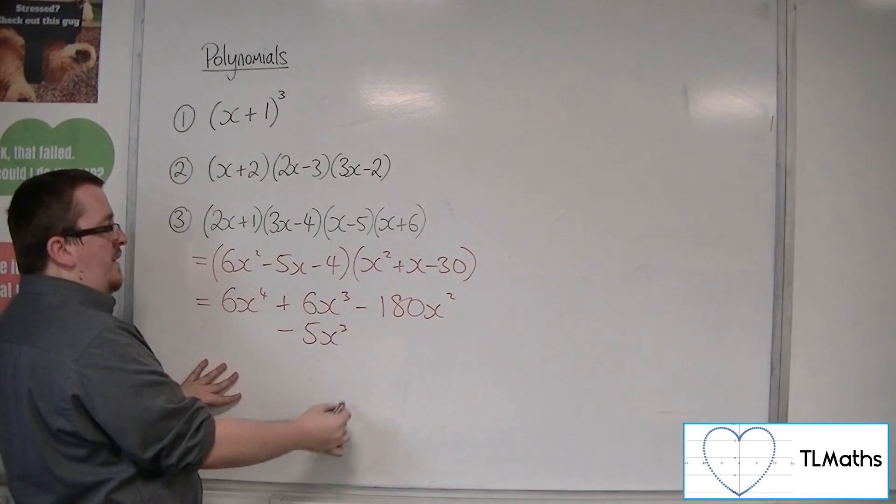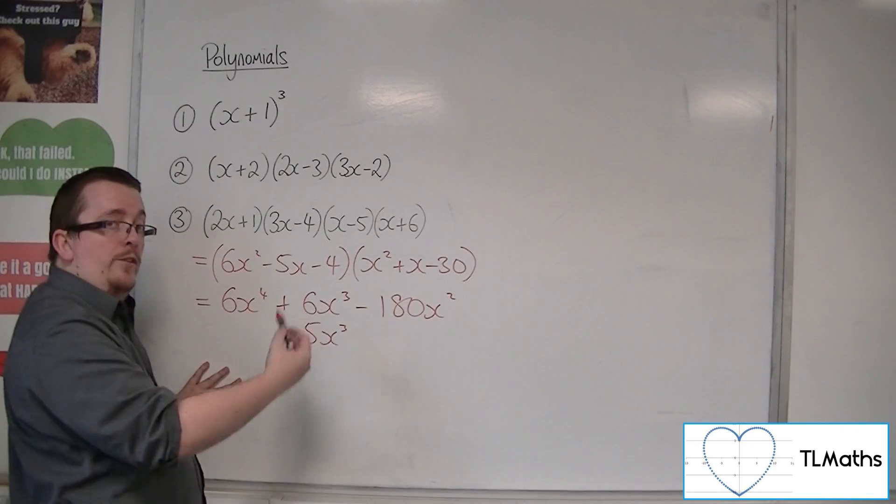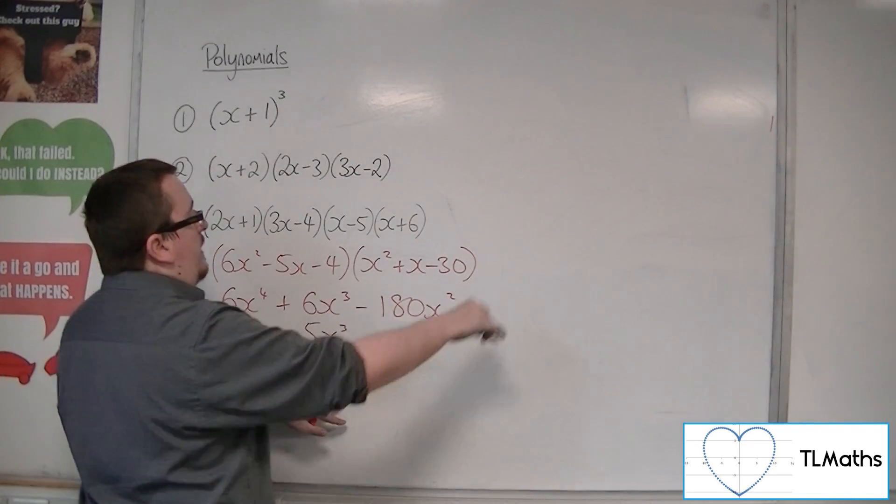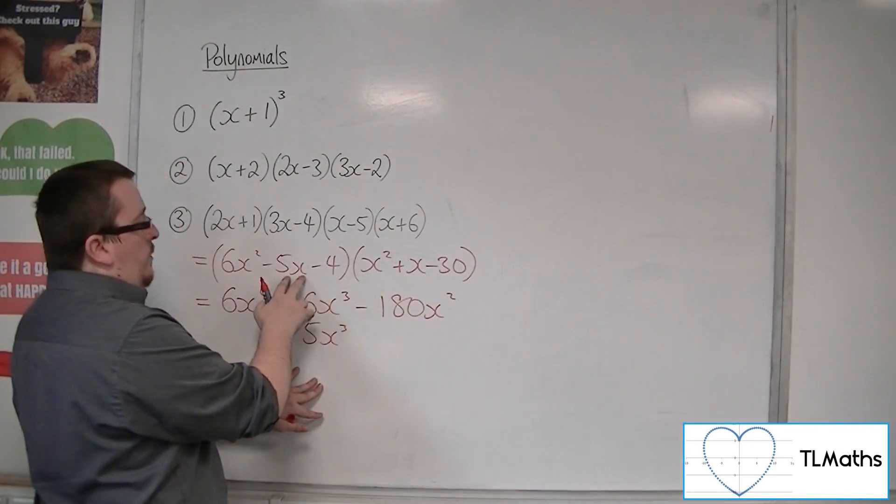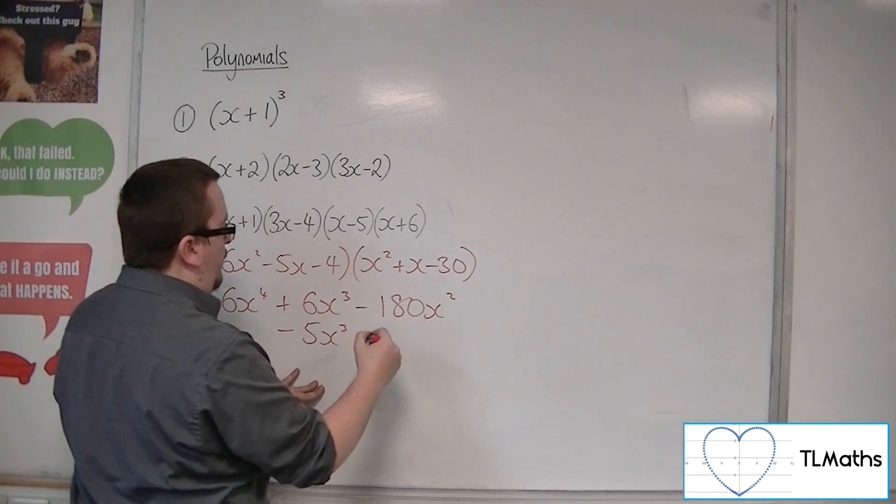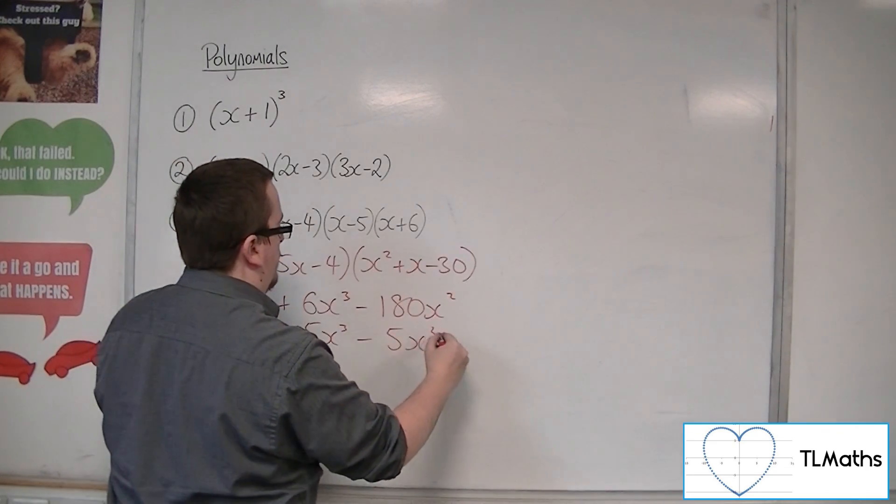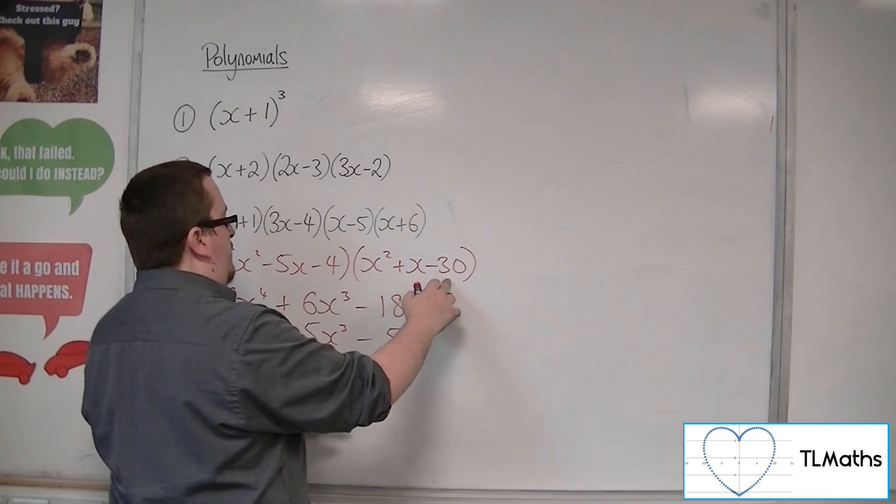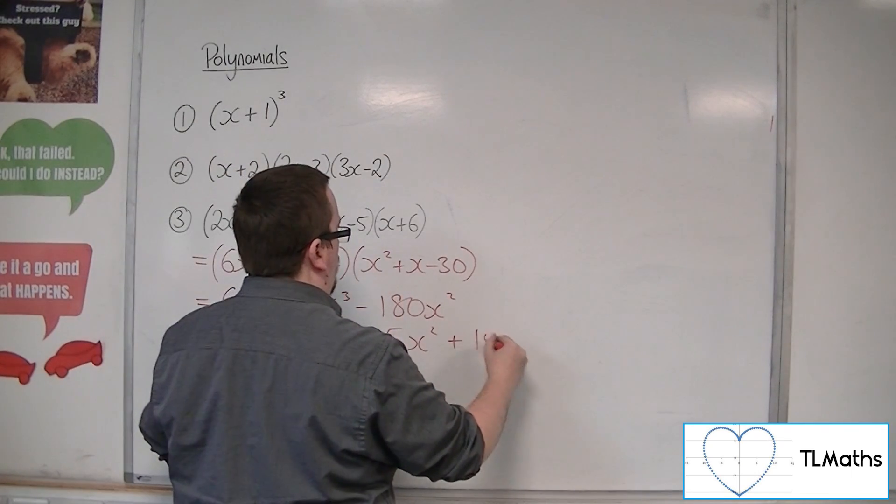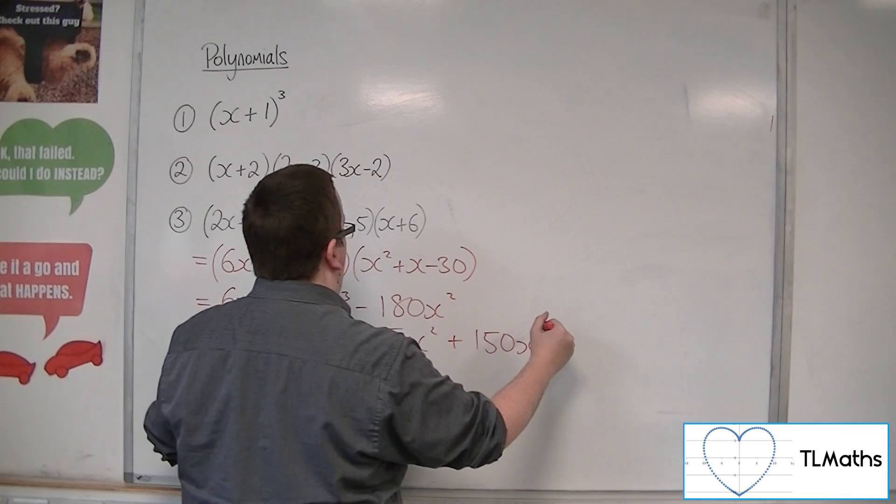Notice how I'm going to start putting the x cubes underneath one another and the x squareds and the x's. So we've done those two. -5x times x is -5x². And then -5x times -30 is +150x.